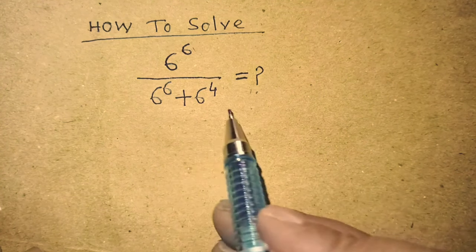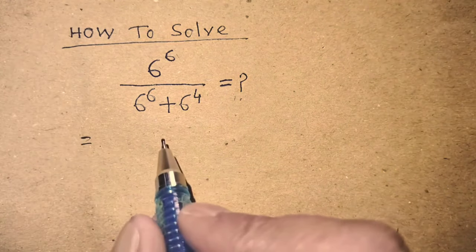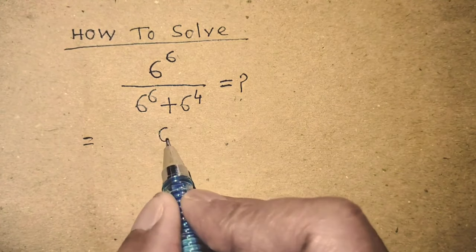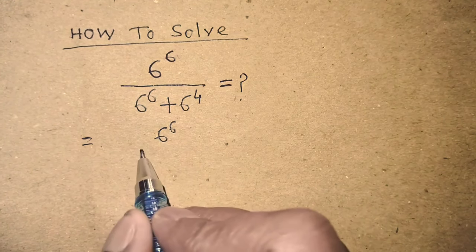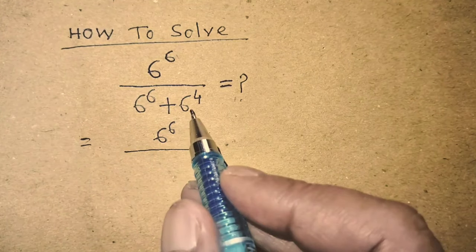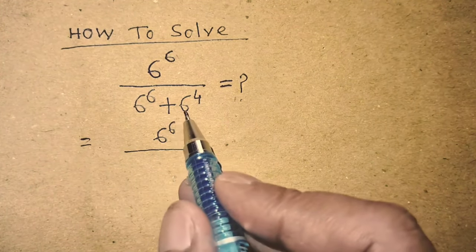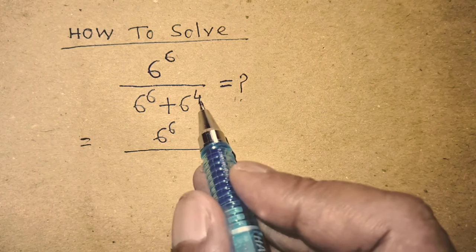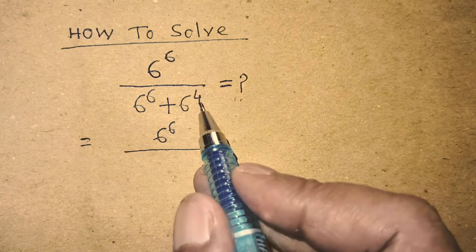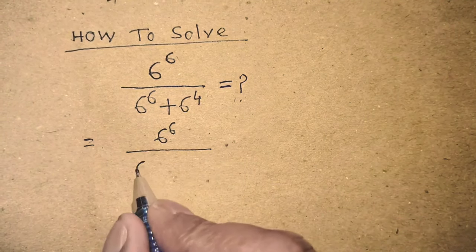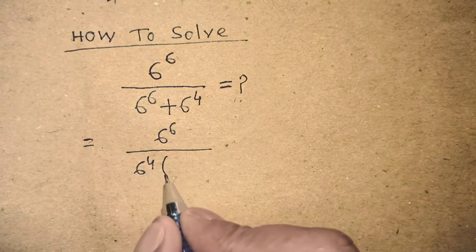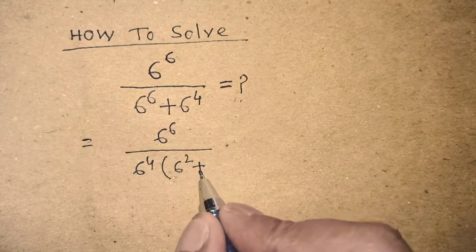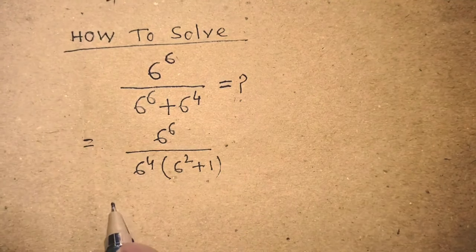We can write from this algebraic expression 6 to the power 6 over — in the denominator there are two terms, and the common factor of those two terms is 6 to the power 4. So we can write 6 to the power 4 times 6 to the power 2 plus 1.